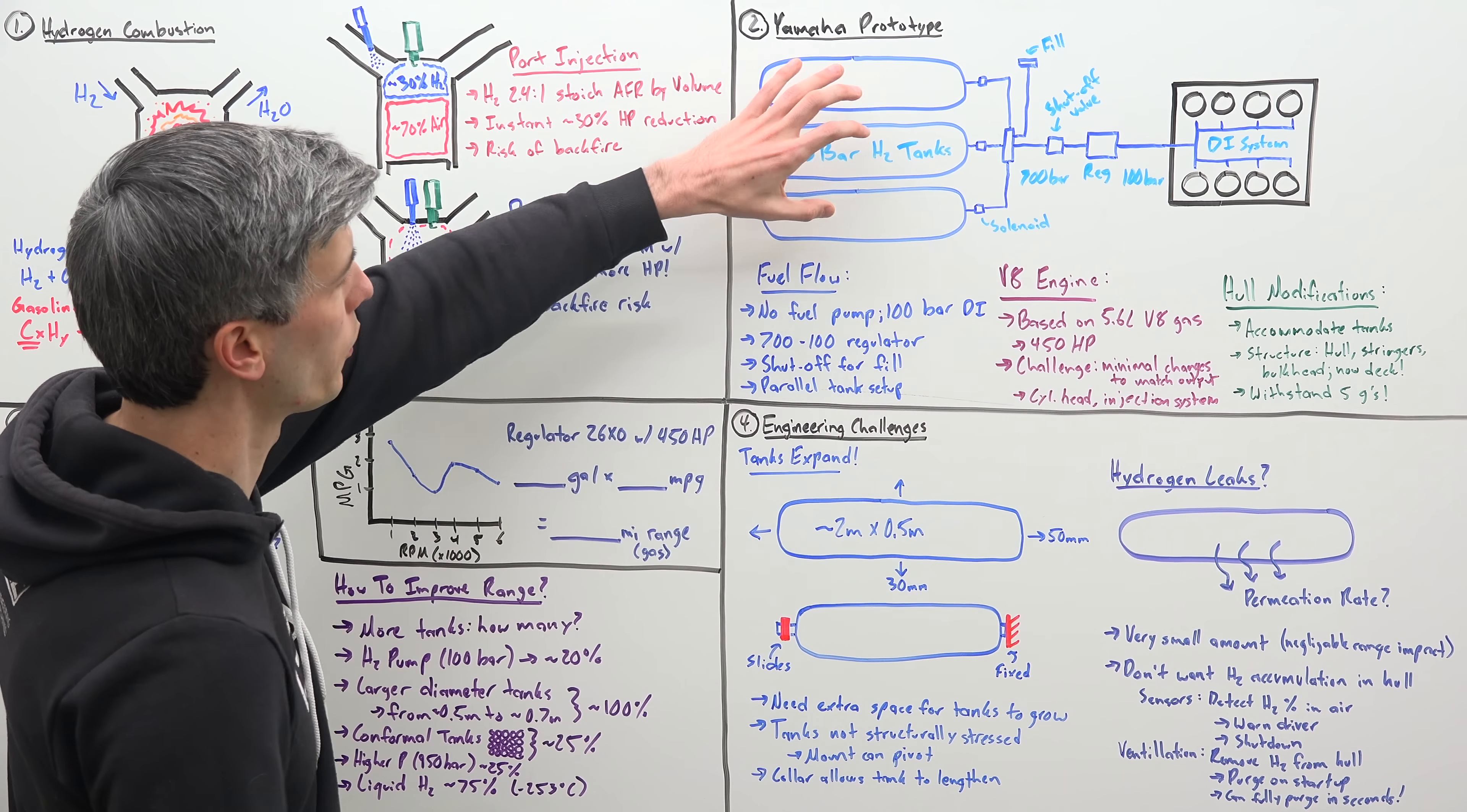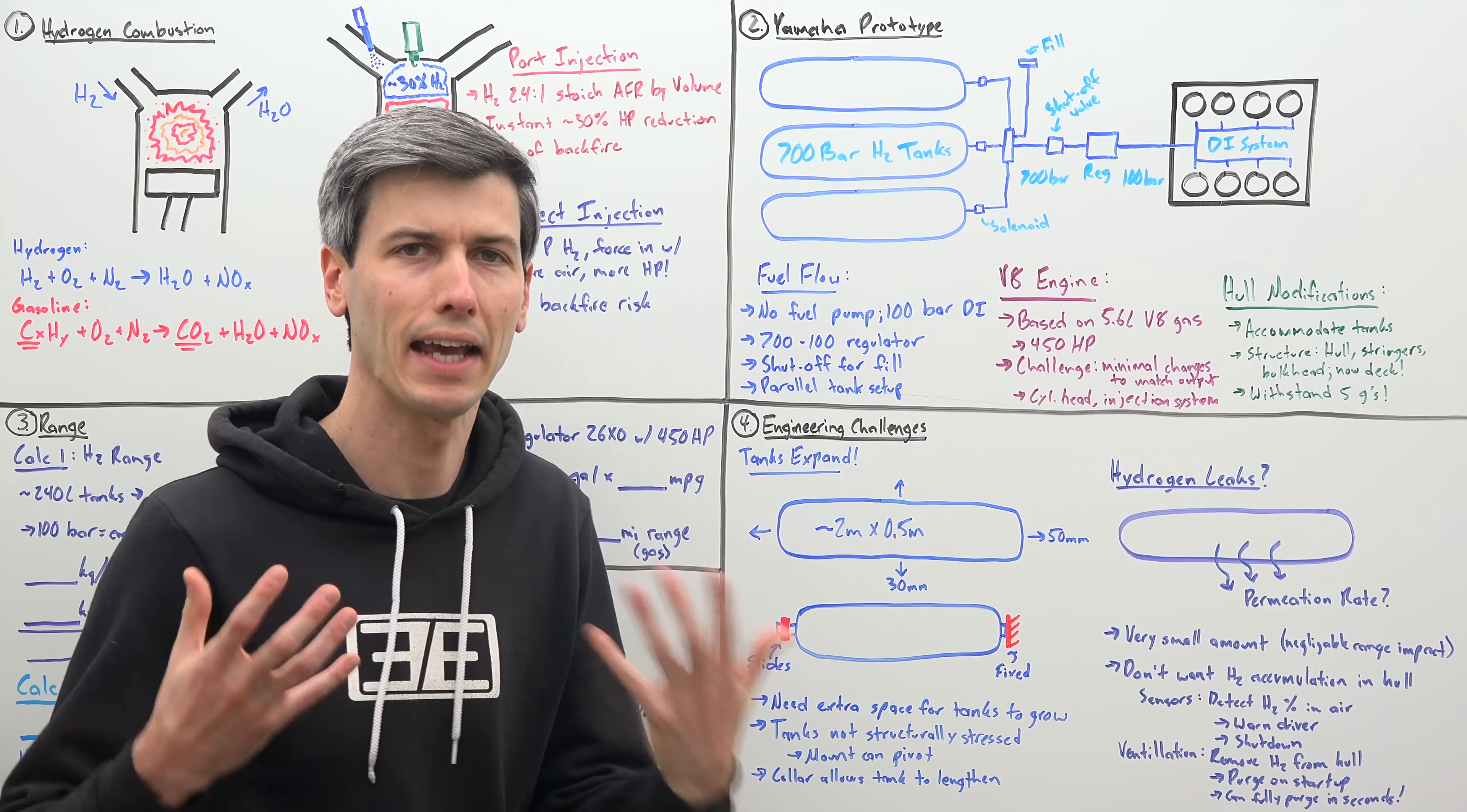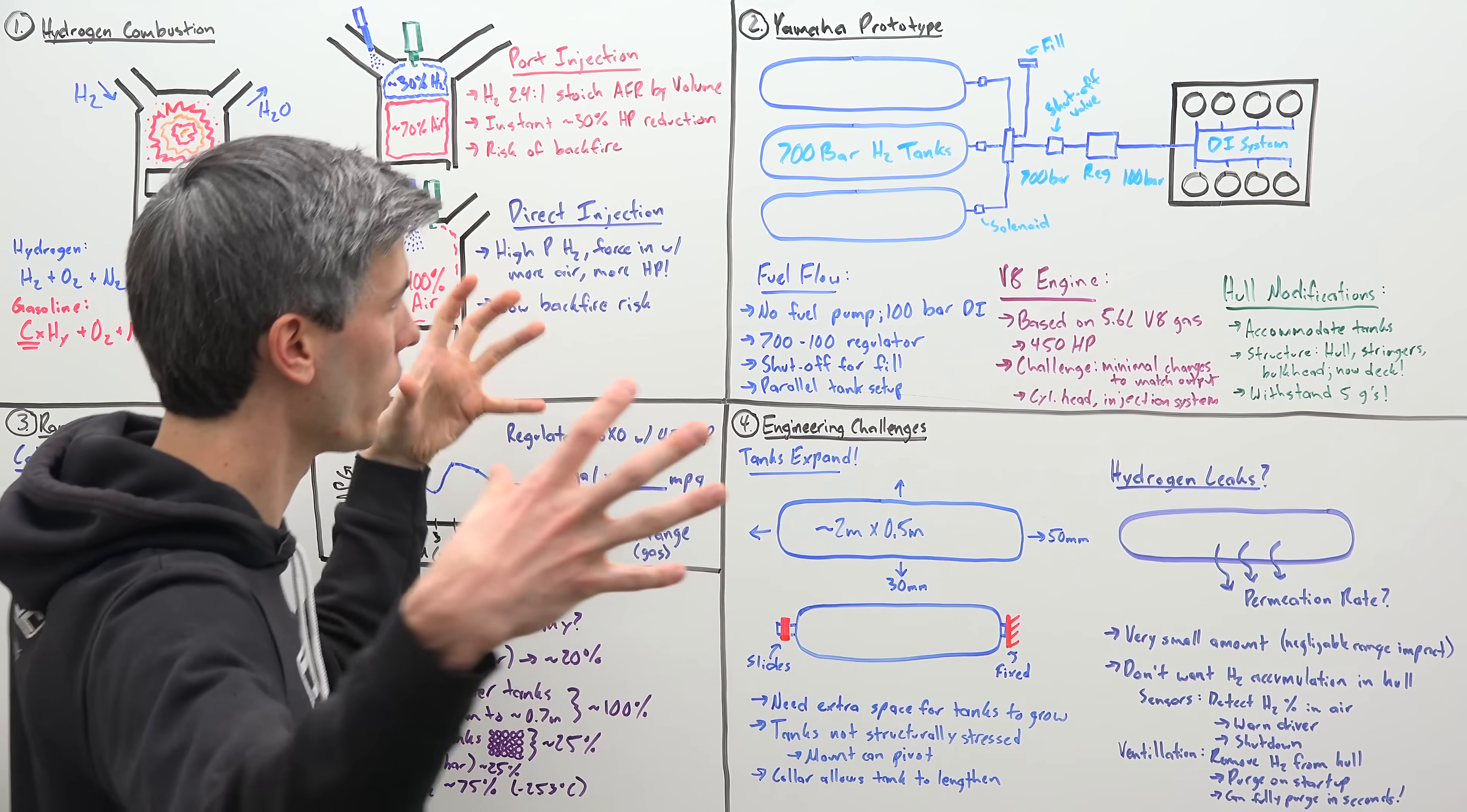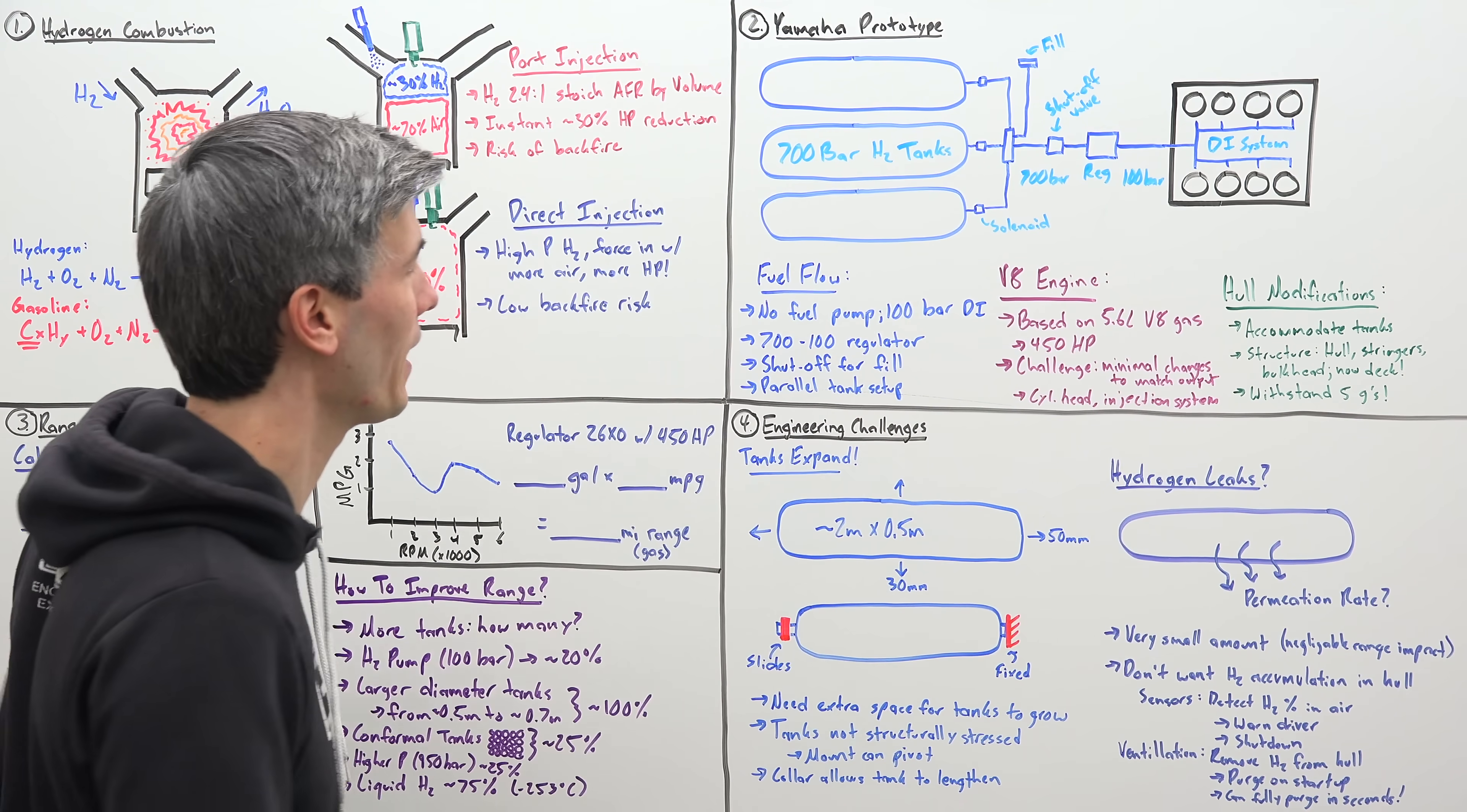Alright, so with this boat, there are three high-pressure, large hydrogen tanks. They are storing that gaseous hydrogen at 700 bar. Again, hydrogen takes up a lot of space at atmospheric pressure. So you have to pressurize it to get more hydrogen in a smaller space, about 10,000 psi.